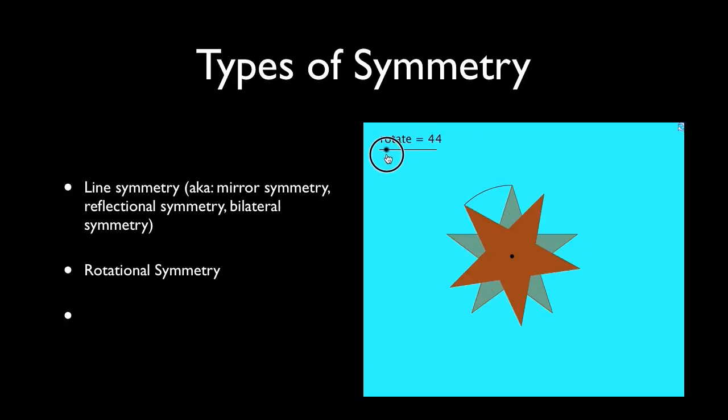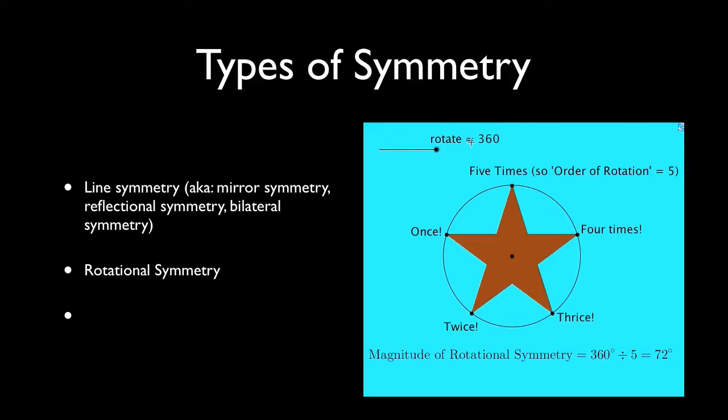That star shape has rotational symmetry because if you rotate 72 degrees, the image and the preimage look the same. Same thing happens again when you rotate 144 degrees and so on. And so we say this particular shape has five-fold rotational symmetry.